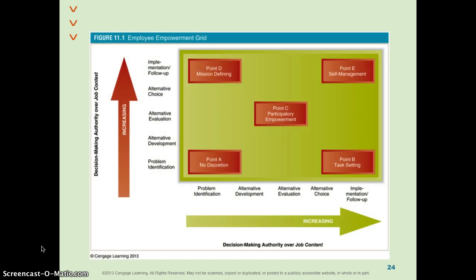Here is a visual of empowerment. The y-axis represents job context — the job goal, your pay, your atmosphere — and job content is how you do it. At point A, you are told what the job is, where you'll do it, how much you'll be paid, and you do it only one way, completely directed. At point E, the job context is discussable — where you do it, what the goal is, how we focus it — and how you do it is completely in your control. The other points represent different sections along the empowerment continuum.